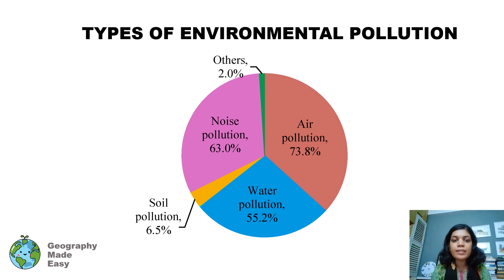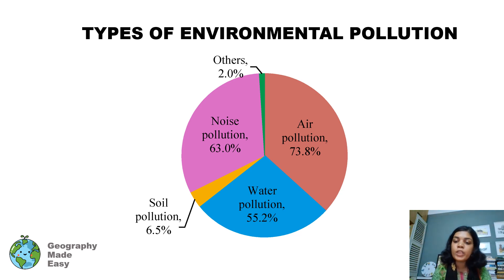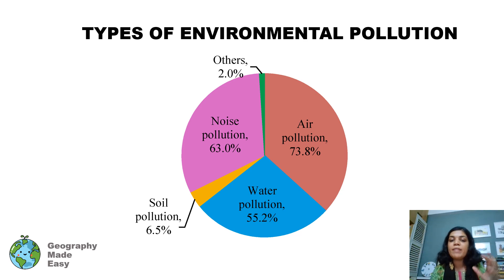Looking at the different types of environmental pollution, we have a pie chart showing the percentage of environmental pollution in the world. Air pollution is the highest, followed by noise pollution, then water pollution — this is especially true for developing nations. Then it is followed by soil pollution and other different types of pollution. We will look at each of these pollution types in detail, understanding the causes, impacts, and any mitigation measures to reduce this kind of pollution.